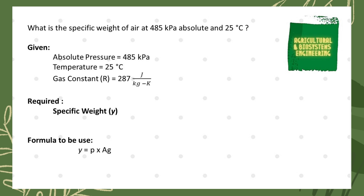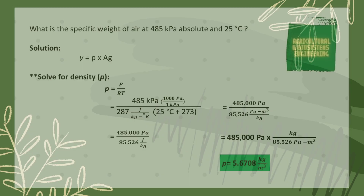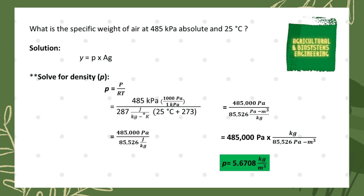The formula we are going to use is: specific weight, symbolized by the small letter y, is equal to density, symbolized by p, multiplied by acceleration due to gravity. The first thing we need to solve is the value for density. The formula for density is equal to the quotient of pressure over the product of gas constant and temperature in Kelvin.